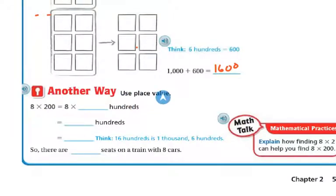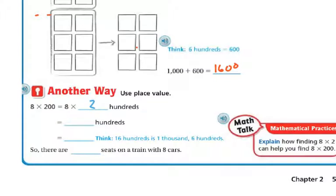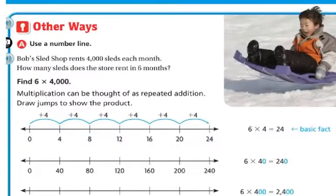So another way that you can use place value: 8 times 200 equals 8 times two hundreds. And 8 times two hundreds is sixteen hundred. If you think sixteen hundred is 1,600, then you're going to know that there are 1,600 seats on the train with eight cars.